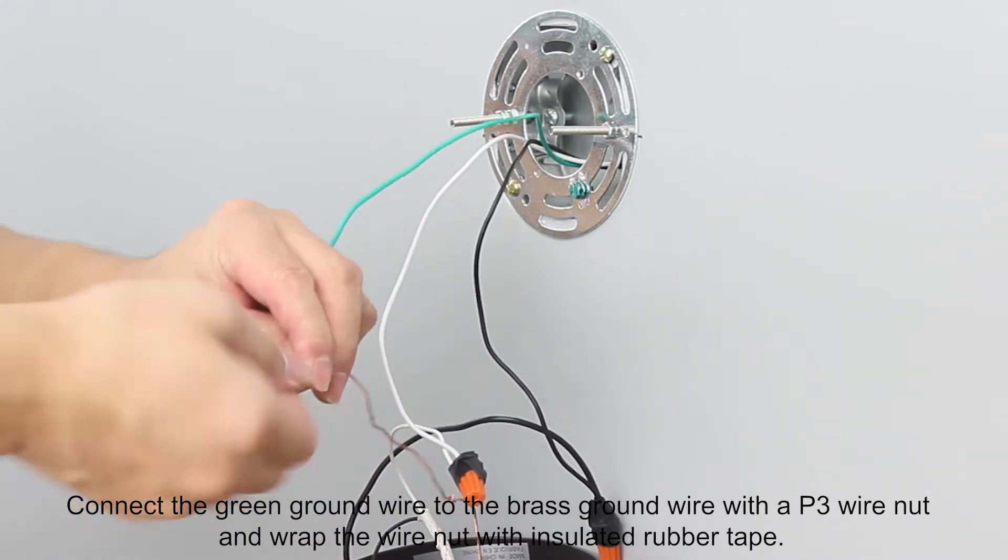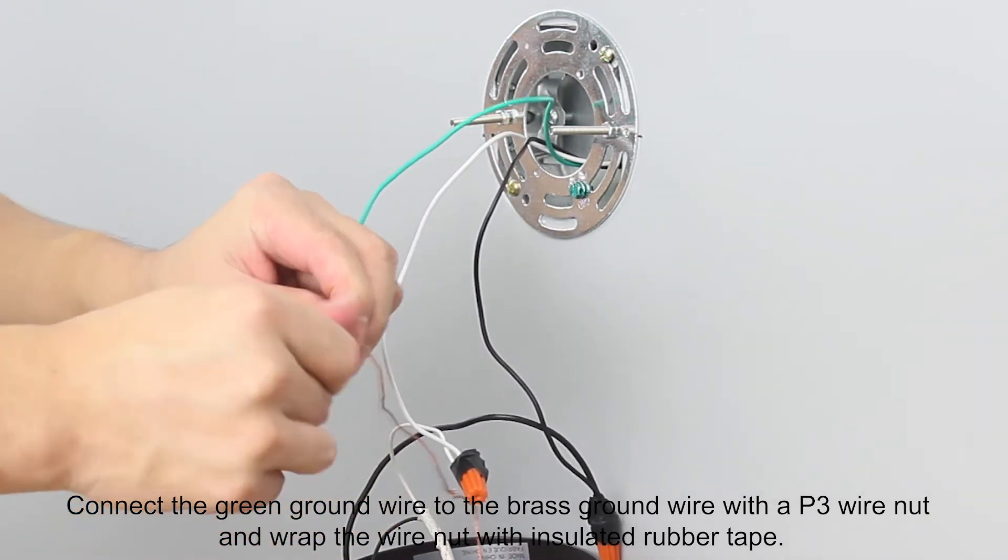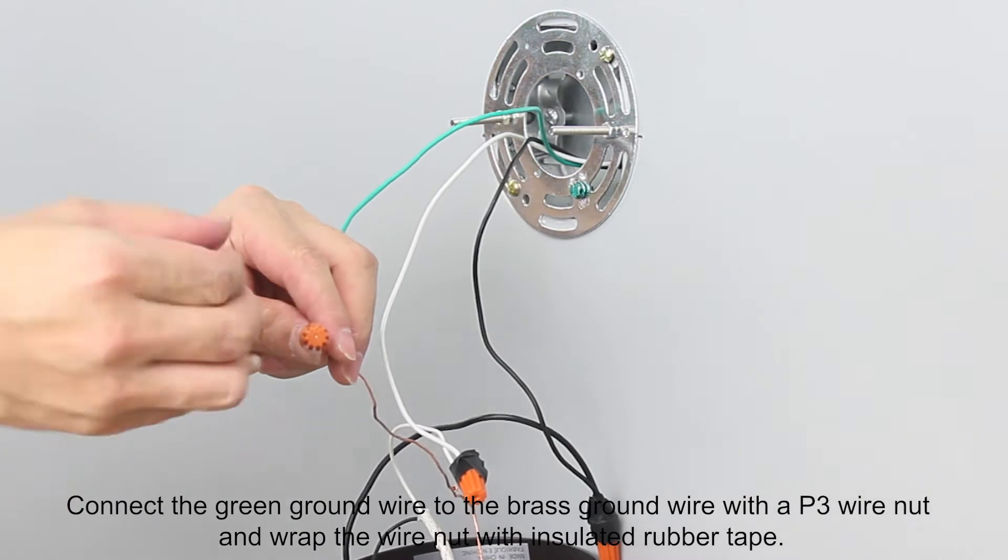Connect the green ground wire to the brass ground wire with a P3 wire nut and wrap the wire nut with insulated rubber tape.